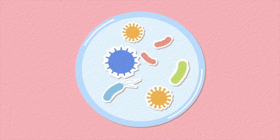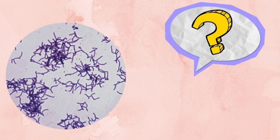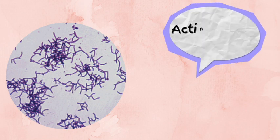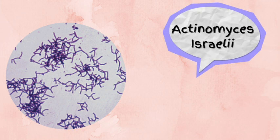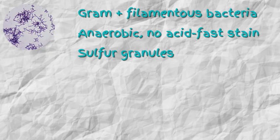What organism can be seen in this picture? Actinomyces. Take a moment, pause the video and try to remember everything you know about actinomyces. Actinomyces is a gram-positive filamentous bacteria. It is anaerobic and does not have an acid-fast stain. You can also see sulfur granules — whenever you see sulfur granules in a question stem, always think about actinomyces.